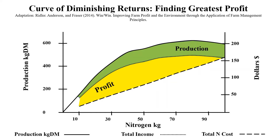So there's always tension about who wants to be where on this chart. If you're a productionist — like a soil scientist, an agronomist, or even a fertilizer rep — you want to be all the way up here at 100 kg of nitrogen, because that lifts production right to point T.